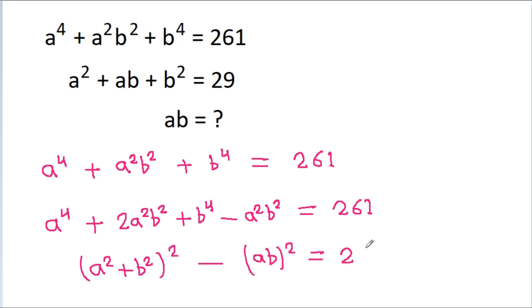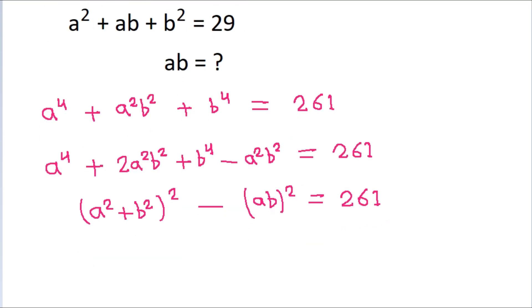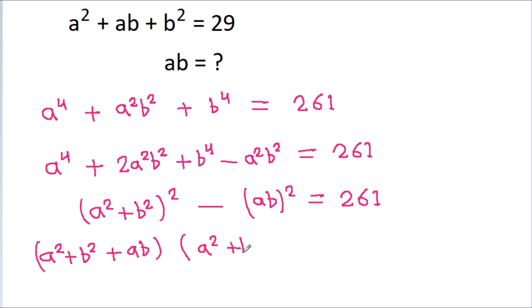Now using the identity A² − B² = (A + B)(A − B), we get (a² + b² + ab)(a² + b² − ab) = 261. We are given that a² + ab + b² = 29.